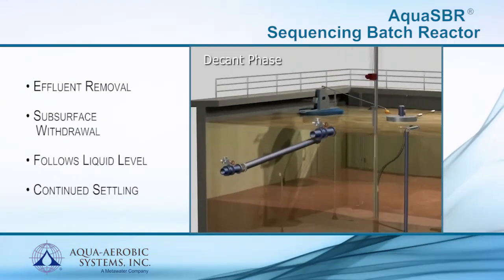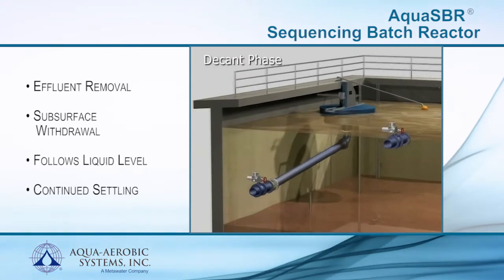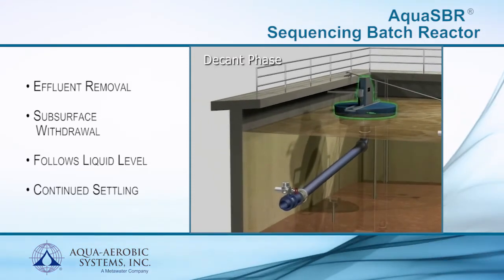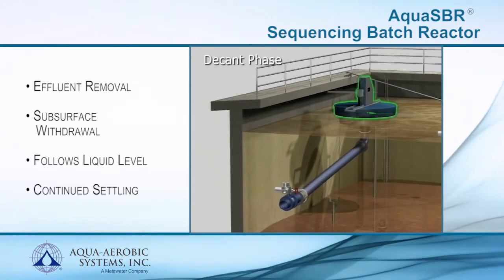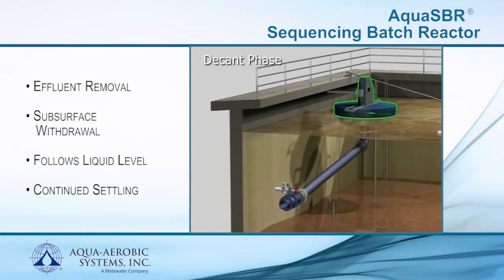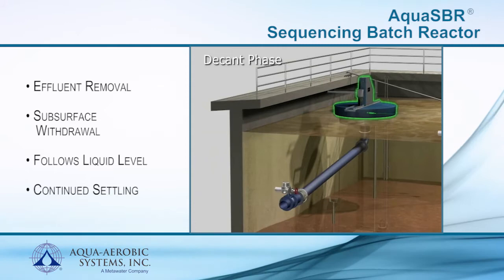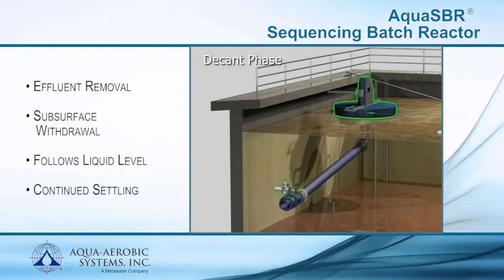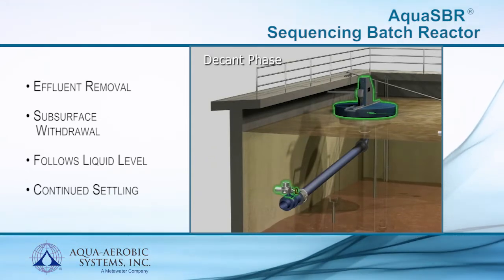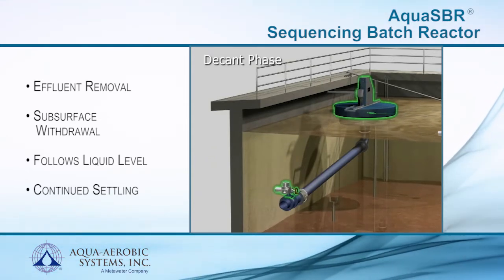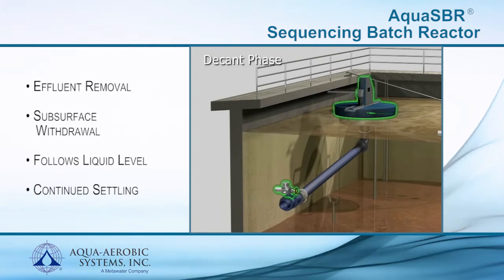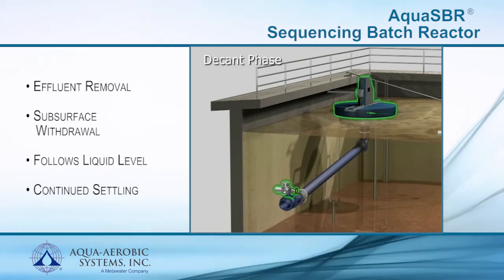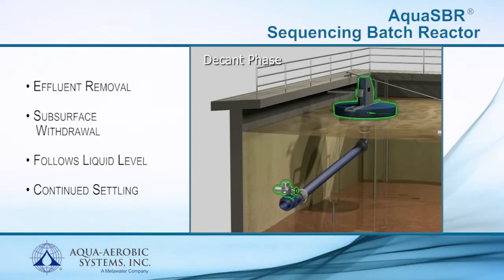The final phase of the Aqua SBR is the Decant phase. At this stage, the clarified water must be removed from the reactor equal to the same volume that entered during the filling phases. Throughout the Decant phase, influent flow is not allowed to enter the reactor and the aeration and mixing equipment remains off.